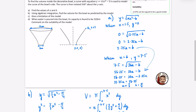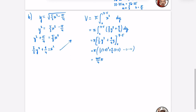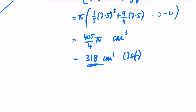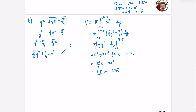The exact form is 405/4 π. In a modelling context it makes sense to also give a decimal: 405/4 × π ≈ 318 cm³ to three significant figures. So the examiner gets both the rounded version and the exact version.